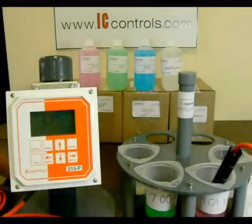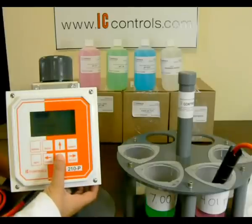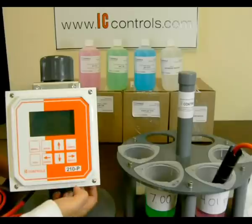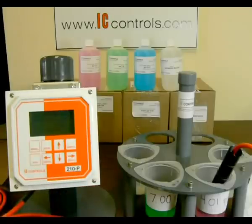Again, select pH, Calibrate, Buffer 2, 4 pH. Wait for the analyzer to accept the calibration and select sample. You should receive a reading of 4 pH.